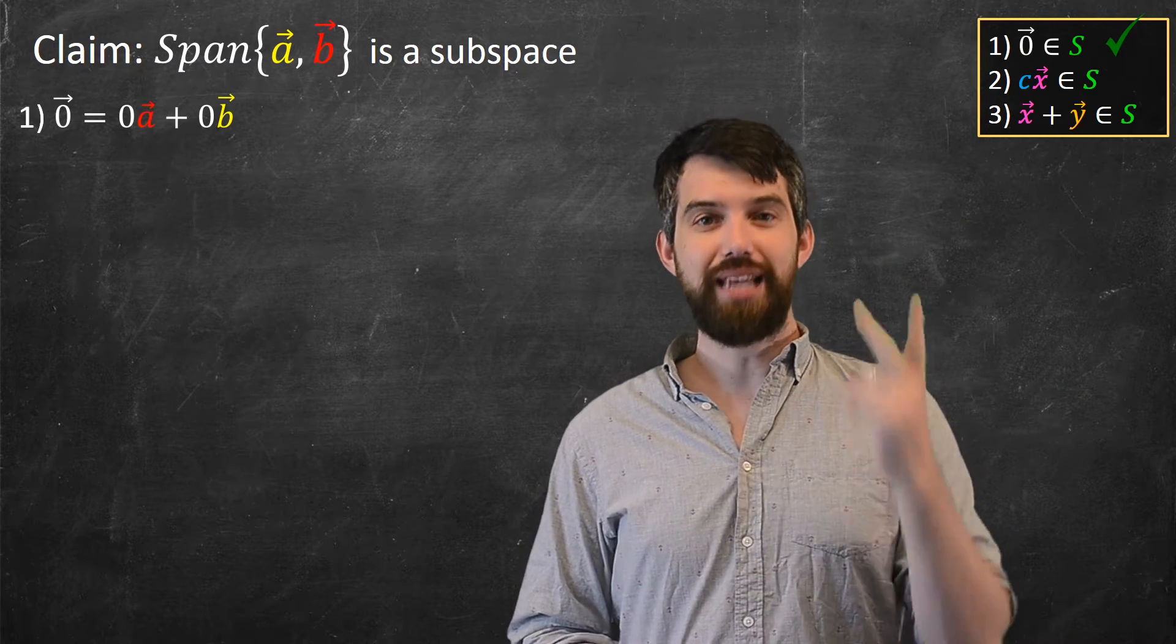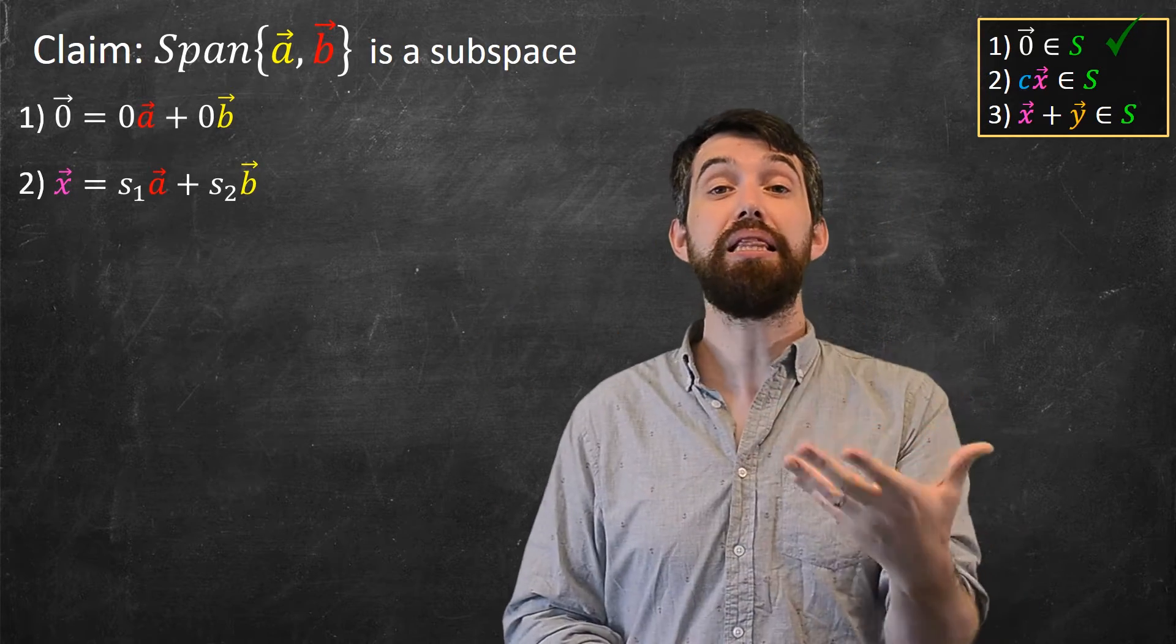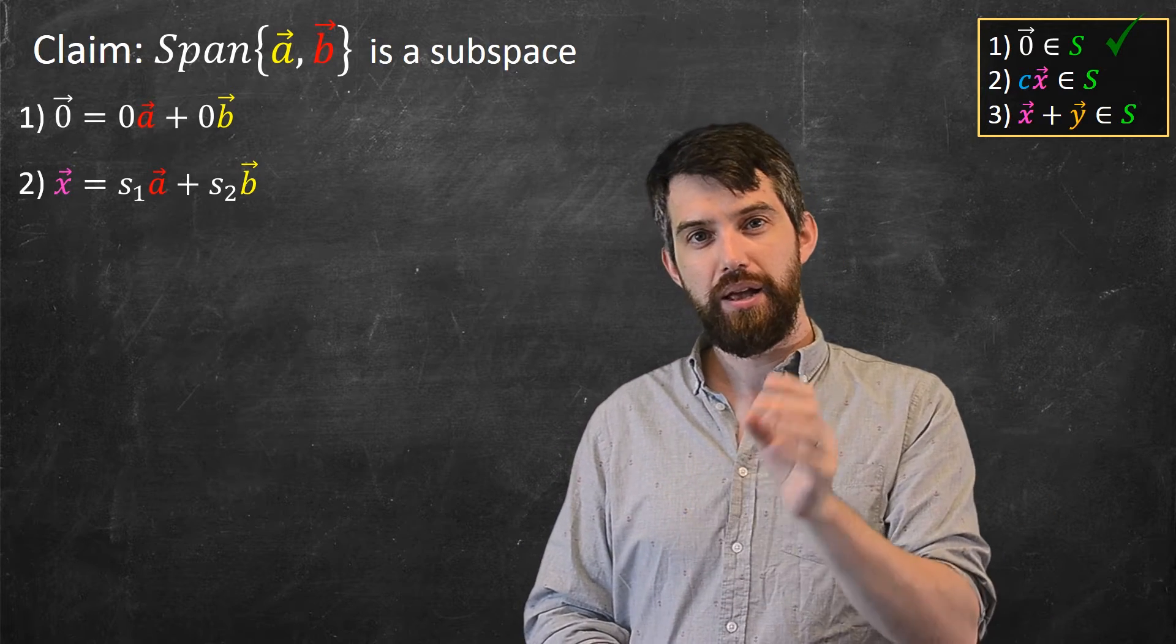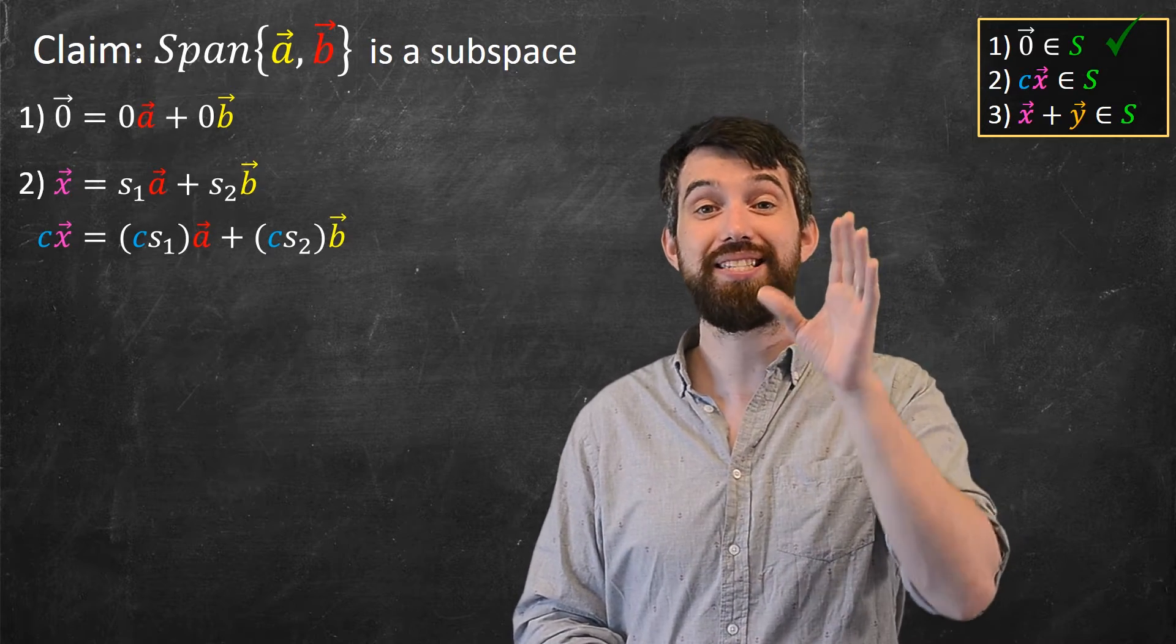Now, let's continue. Let's go and look at the second property. So let me take one vector X. It's written as a linear combination of the A and the B. Or written as S1A and S2B. Now, I want to multiply it by a scalar. So let's come along here and I multiply it by a scalar C.